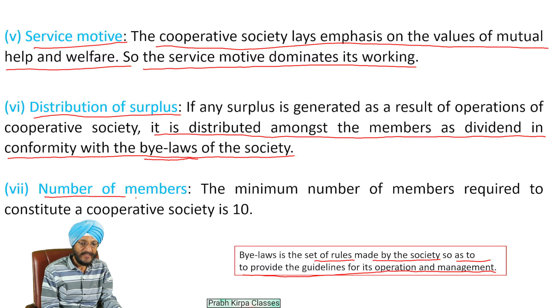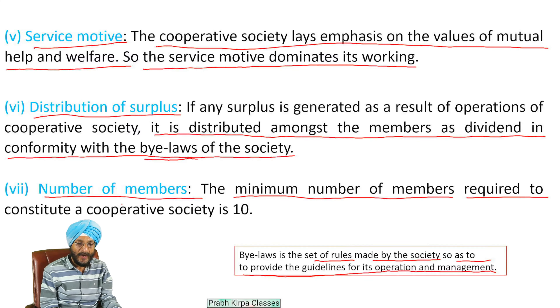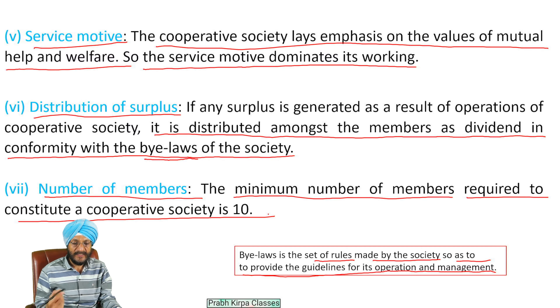The next point is the number of members of the cooperative society. The minimum number of members required to constitute a cooperative society is 10.